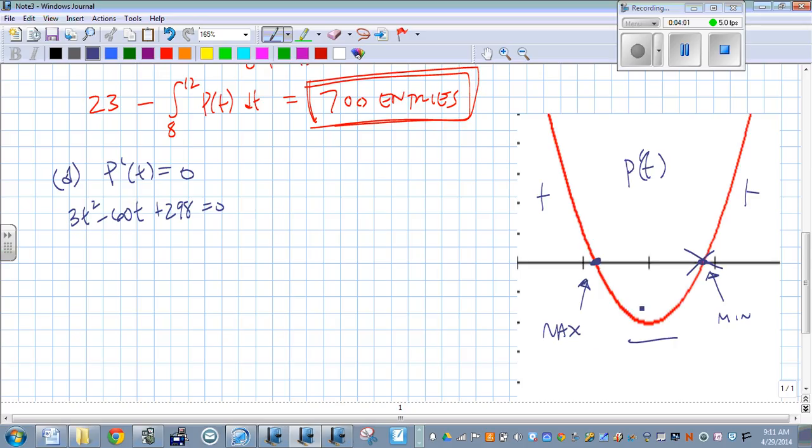What we need to figure out is what's p of 8. All right, that's our first value on the interval, p of 12, and p of whatever this x value is. All right, to determine our absolute max, we have to take into account those endpoints and this local maximum.